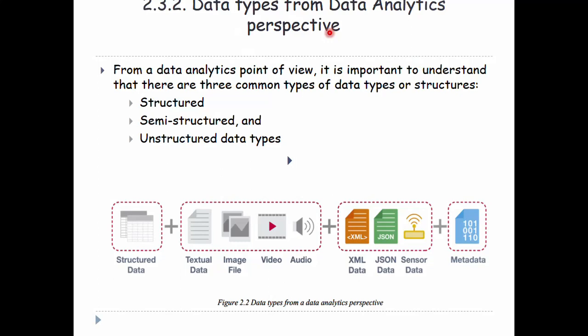In computer science or computer programming perspective, from a data analytics perspective and from a data analysis point of view, it is important to understand that there are three common types of data types or structures: structured data, semi-structured data, and unstructured data.